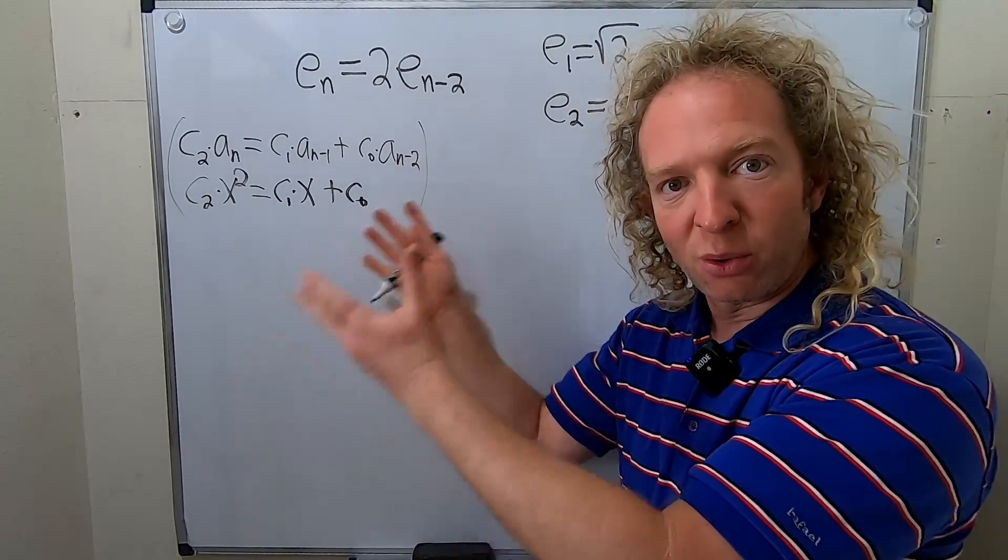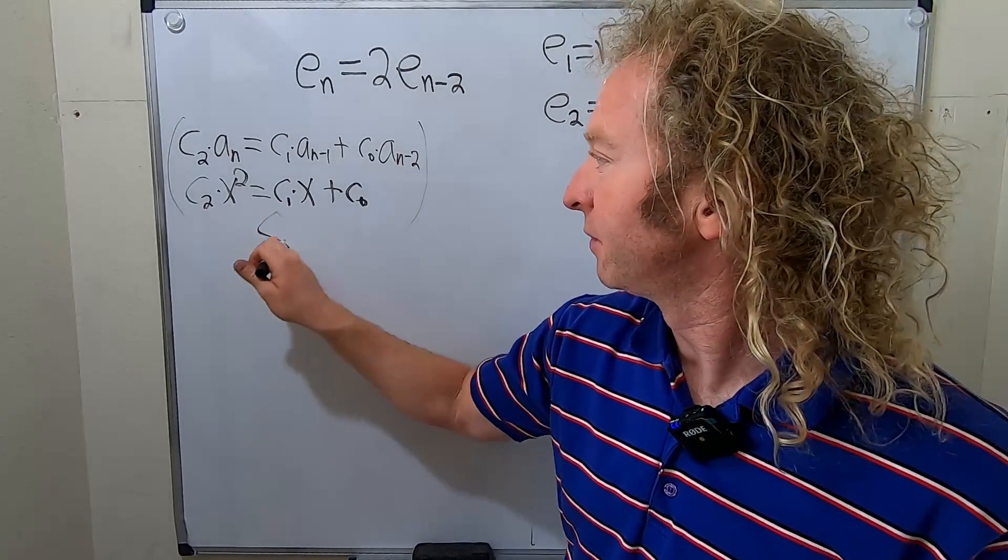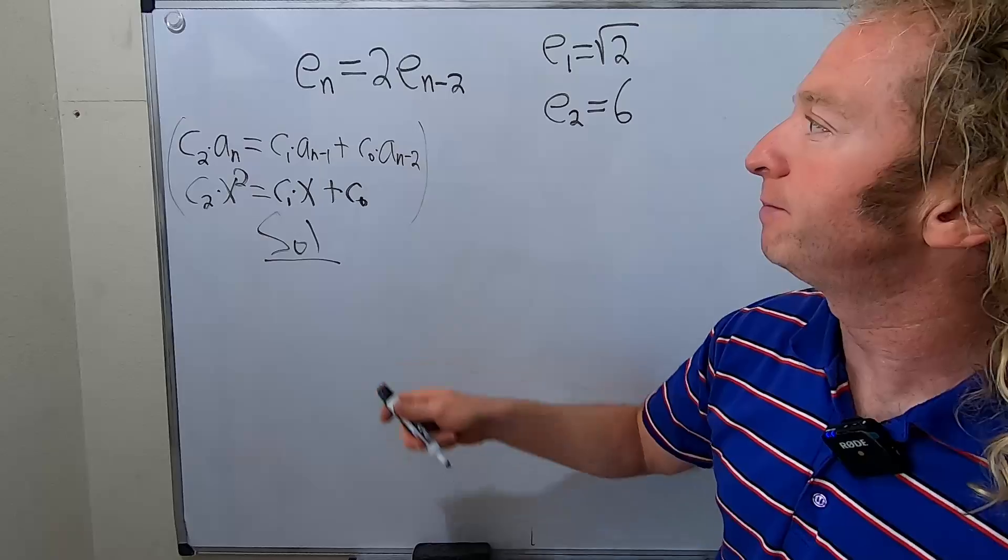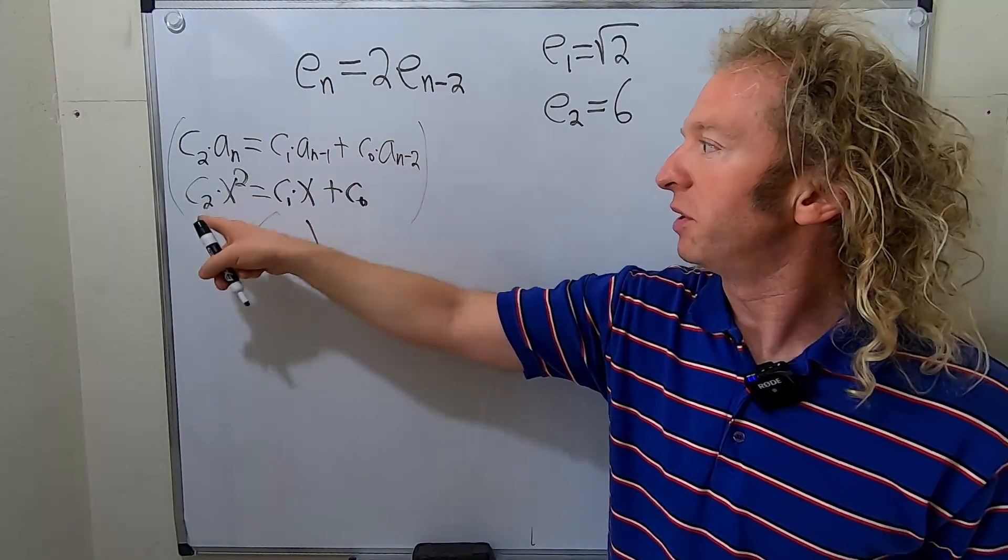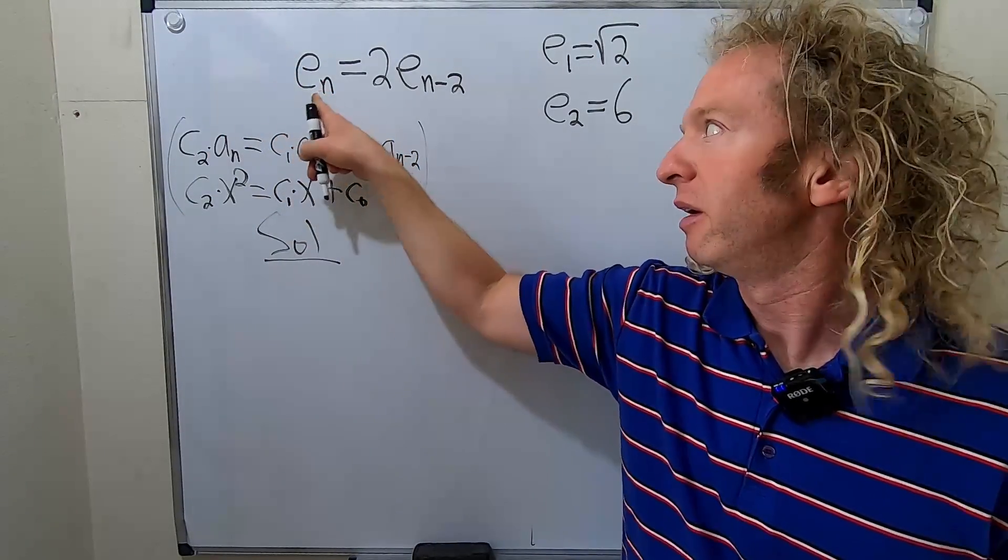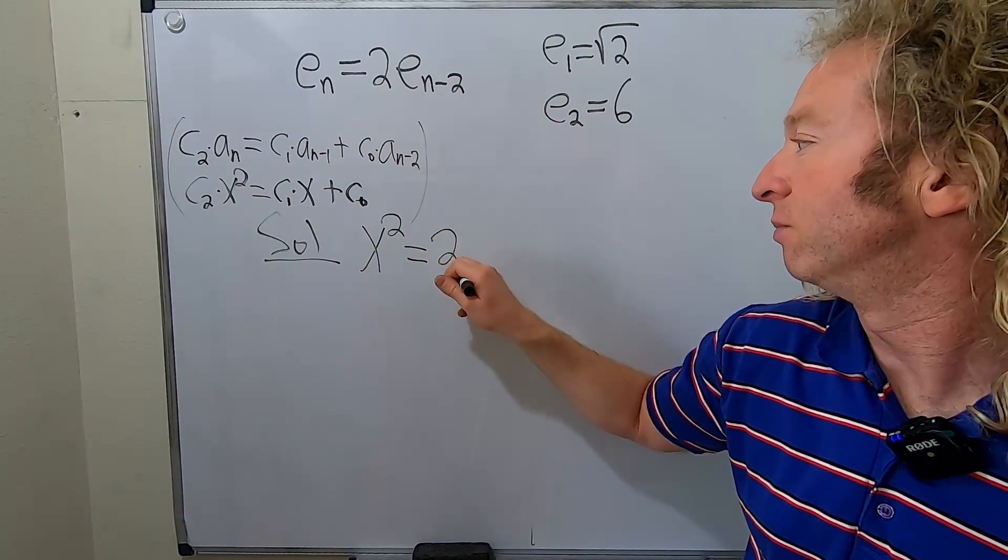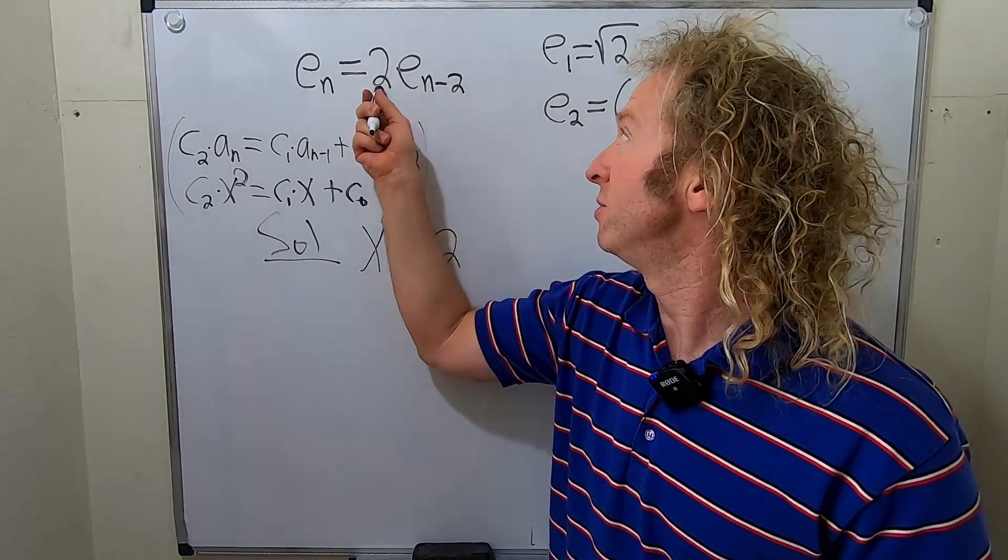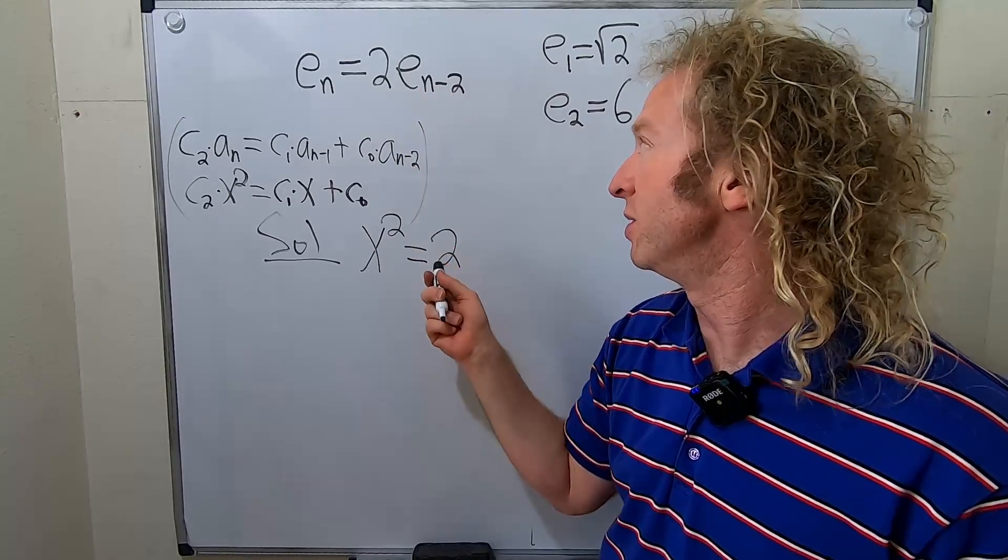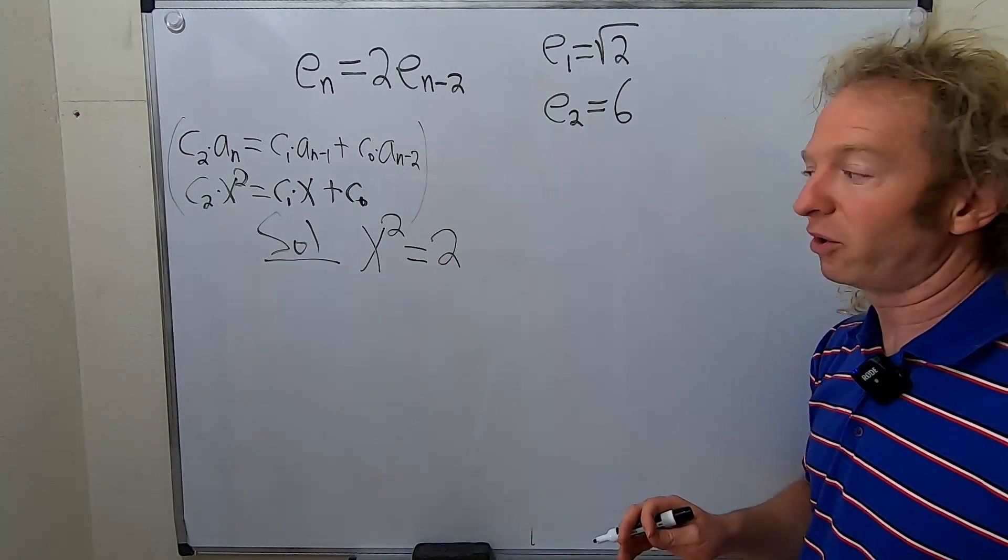Then we solve this, and then from this, we can get the answer. So let's do it. So in this particular problem, we have e sub n, right? The c2 is just 1, so it's not there. So it's just x squared. And then 2, right? That's it. It's just 2. And then it's 2 times e sub n minus 2. It's just a constant, right? So that's all you get.